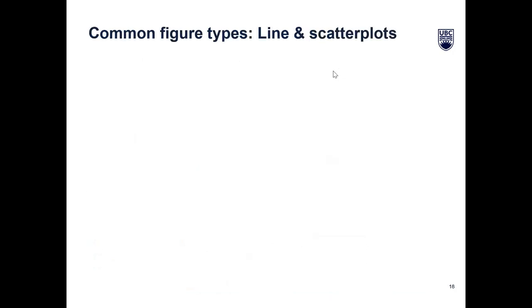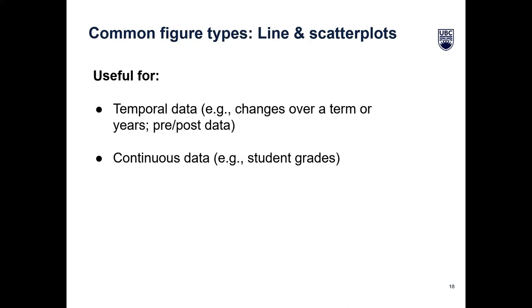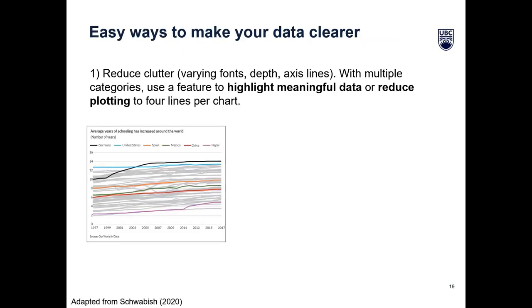Moving away from bar plots, the next piece is line and scatter plots, which are another common visualization. These are really great for temporal data — in the context of teaching and learning, looking at things like changes over term or changes over years. If you're thinking about how motivation shifts over multiple years in a series of courses, or pre-post data — how does student knowledge change from the beginning of the term to the end — as well as continuous data like student grades.